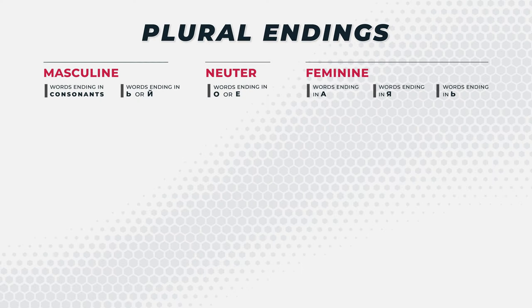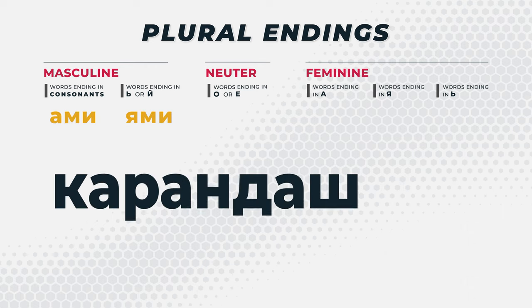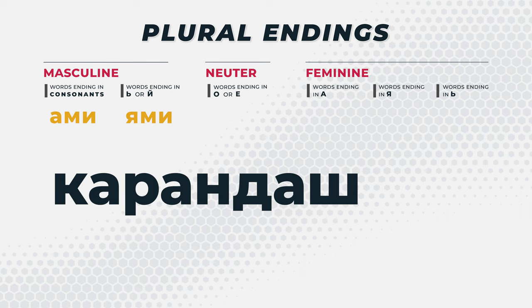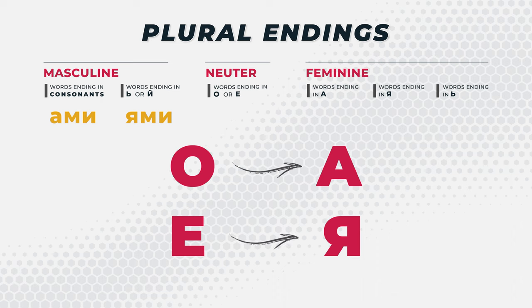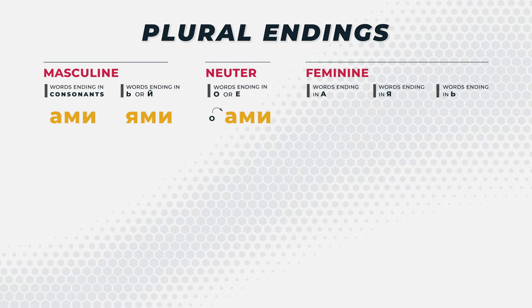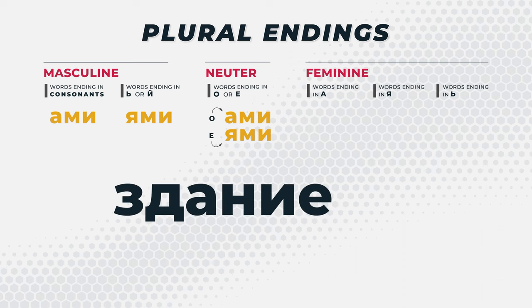The plural endings are even a little bit easier because it's either AMI or YAMI — that's all it is for all the different genders. Most masculine words that end in a consonant are going to end in AMI. Let's take the word karandash — pencil. If you wanted to put pencil in the plural instrumental case, karandash, because it ends in a consonant, would add the AMI sound. For the neuter plural, the easy way to remember this is O goes to A, YE goes to YA. See how it rhymes? O to A, YE to YA. Neuter words ending in O get AMI, and neuter words ending in YE go to YAMI. Let's take the word zdanya — a building. If you want to say buildings in the plural, it's zdanyami.